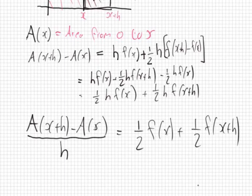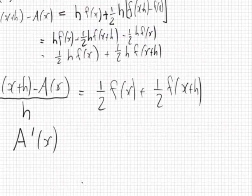Now if h goes to zero and becomes really small, what do we get on the left? Remember the definition: f(x+h) minus f(x) over h — that's the derivative! And on the right, if h goes to zero, you get a half·f plus a half·f, so in total f(x).